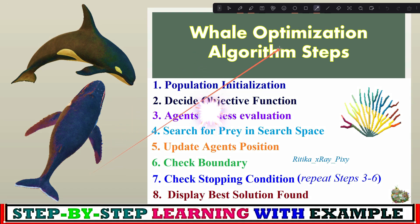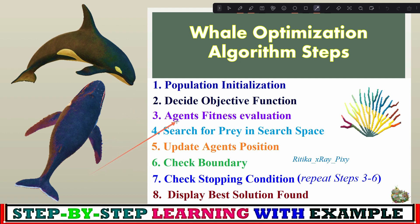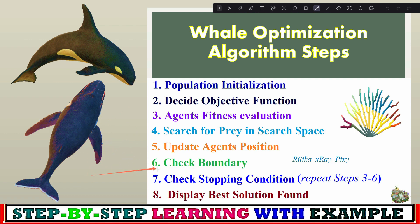Here you can see the different steps used in whale optimization algorithm to find the optimal solution. First, we initialize the population for n agents in the search space. Next, we decide the objective function to optimize. In the main loop, each agent searches for prey and updates its position. We then calculate the new fitness value for updated solutions, check the search space boundary, and check the stopping condition. If not met, repeat from step three to six; else, display the best solution found.